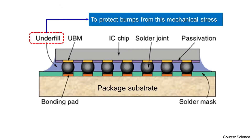Second, flip chip attach process requires an underfill process afterward, because CTE mismatch between the die and package substrate causes mechanical stress on the bumps and can break them. So underfill is required for flip chip attach to protect bumps from this mechanical stress.